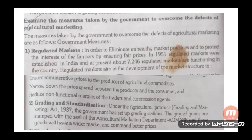Second measure: Grading and standardization. Under the Agriculture Produce Grading and Marketing Act, 1937, the government set up grading stations. Graded goods are stamped with the seal of the Agriculture Marketing Department — that is, the AGMARK seal. These goods command a wider market and better prices, helping farmers who earlier had to sell good and bad quality crops together at low prices.